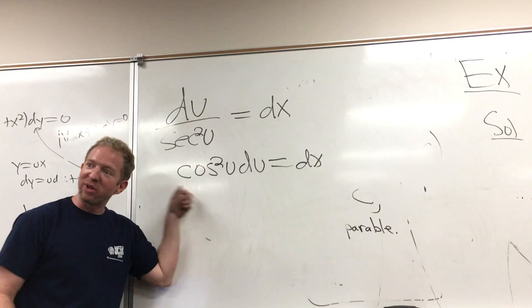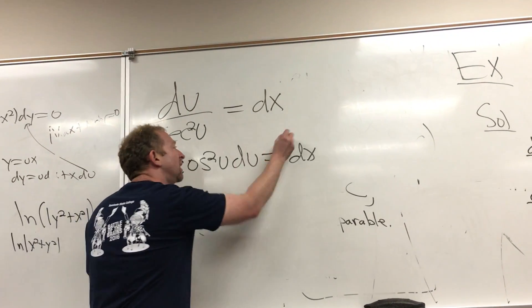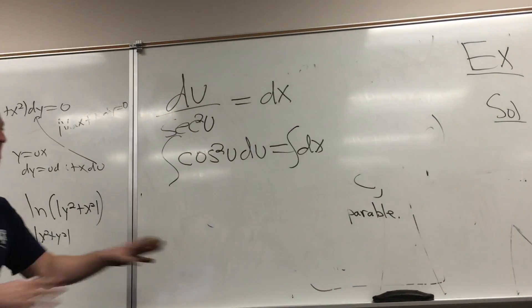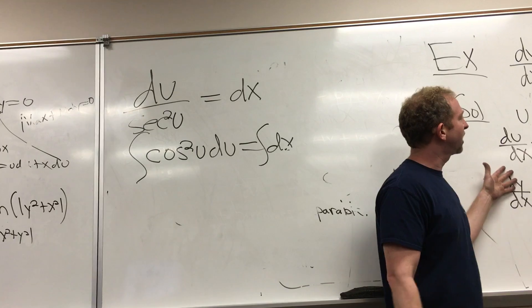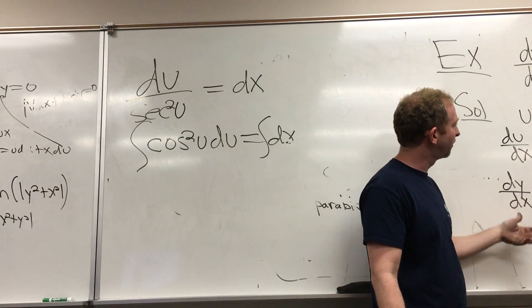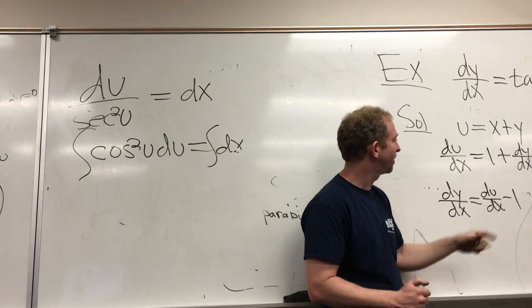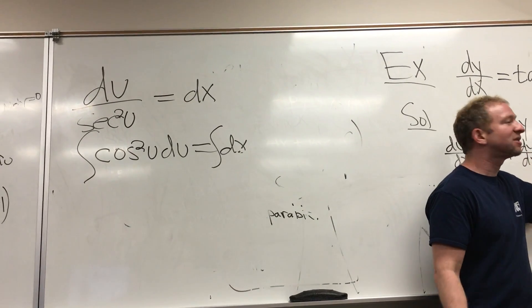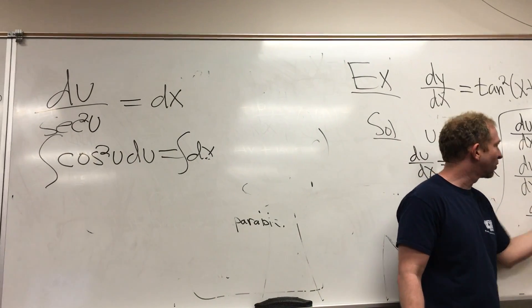And now, when we integrate this, we can use an identity, right? We can use an identity. Any questions up to here? Anything hazy with the process? So you call it u. You find du/dx, right? So it's pretty straightforward. You solve for dy/dx, because you want to have your du/dx everywhere. You write it down. You have to separate it, so you add the 1, right? And then 1 plus tan squared is secant squared.